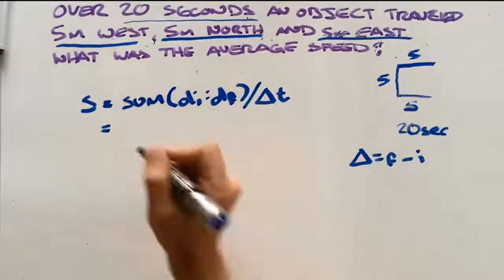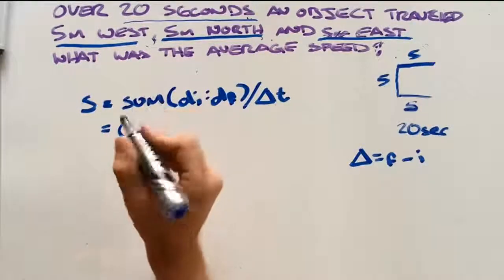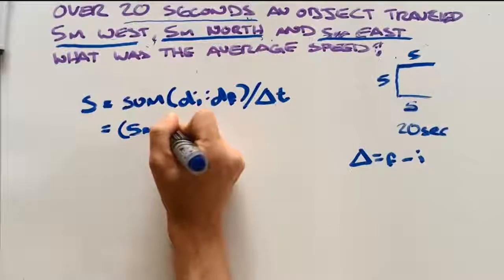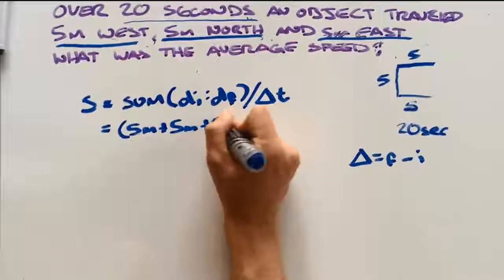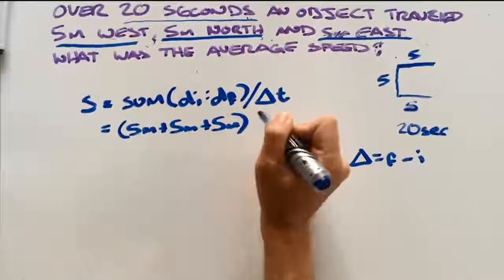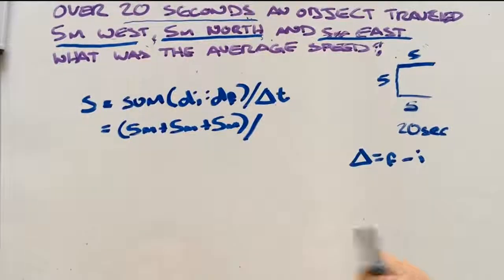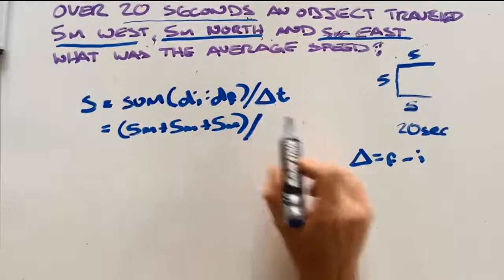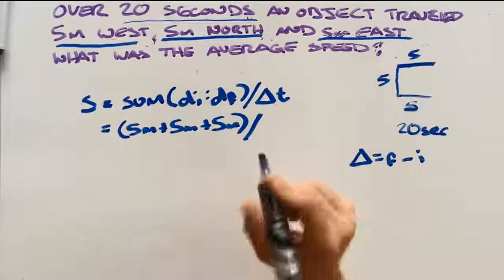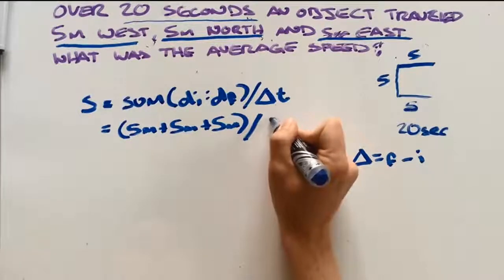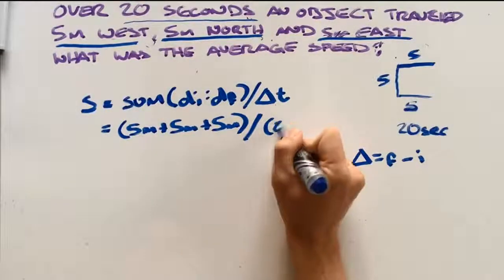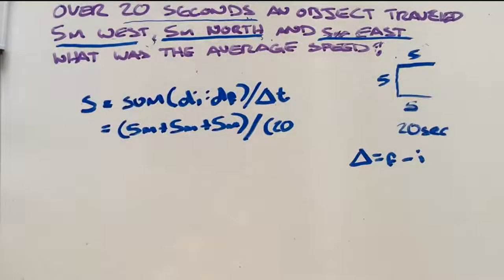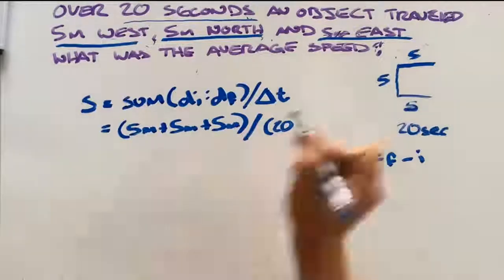If we add up our distance, we have 5 metres plus 5 metres plus 5 metres, divided by our change in time. So, our final is going to be 20, and our initial is going to be 0.